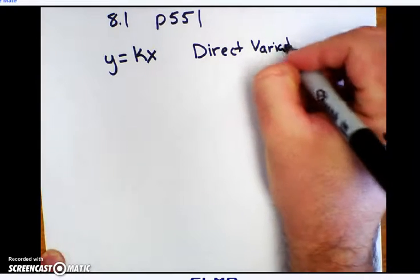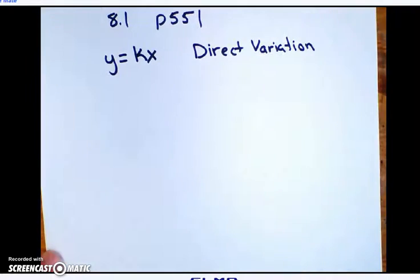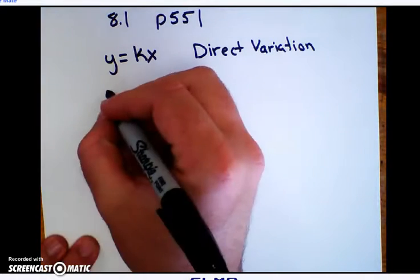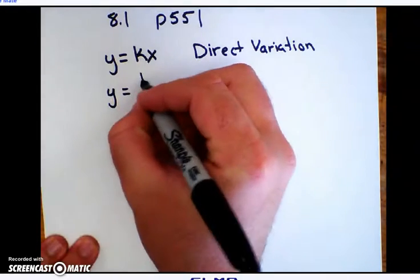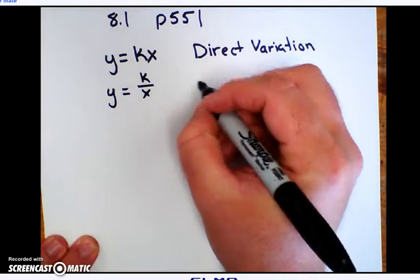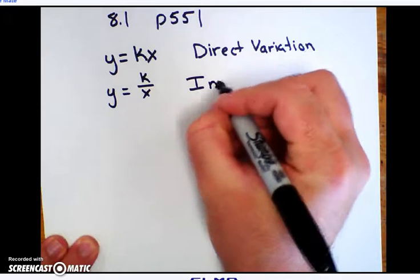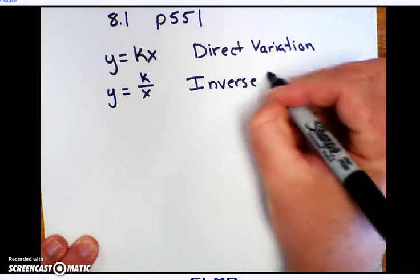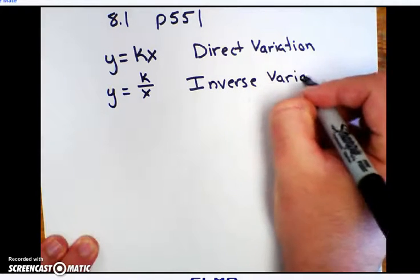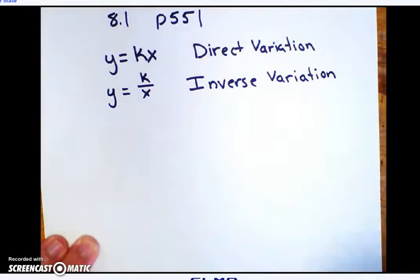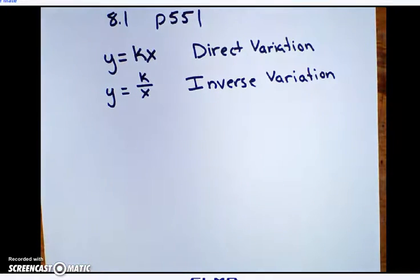This is called direct variation. Now, you didn't spend a whole lot of time on this in Algebra 1, but you did see it. The second one we're going to look at is y equals k over x. This is inverse variation. That's one that you probably did not see in Algebra 1, depending on how far you got.